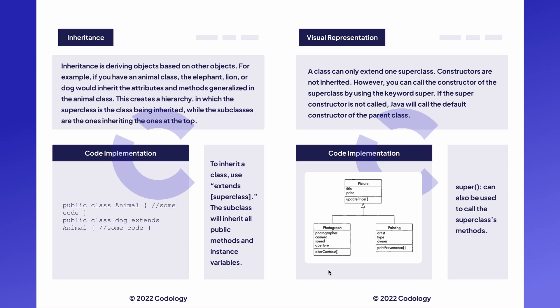To inherit a class you use the extends keyword. In your class definition you say public class name extends the name of your superclass. This will inherit all public methods and instance variables from the superclass.